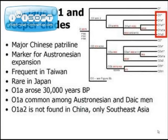Starting with subclade O1: this subclade represents a major Chinese patriline and is thought to be associated with the Austronesian expansion, originating from Taiwan or the southeast coast of China. Subclade O1 is most frequent in Taiwan but is also associated with Han Chinese in South China. It is rarely detected in Japan, suggesting no close relationship between Japanese and Austronesian populations. SNP M119, which defines subclade O1a, is thought to have arisen approximately 30,000 years before present, likely in South China or Southeast Asia. Subclade O1a2 tends to only be detected in Southeast Asia.